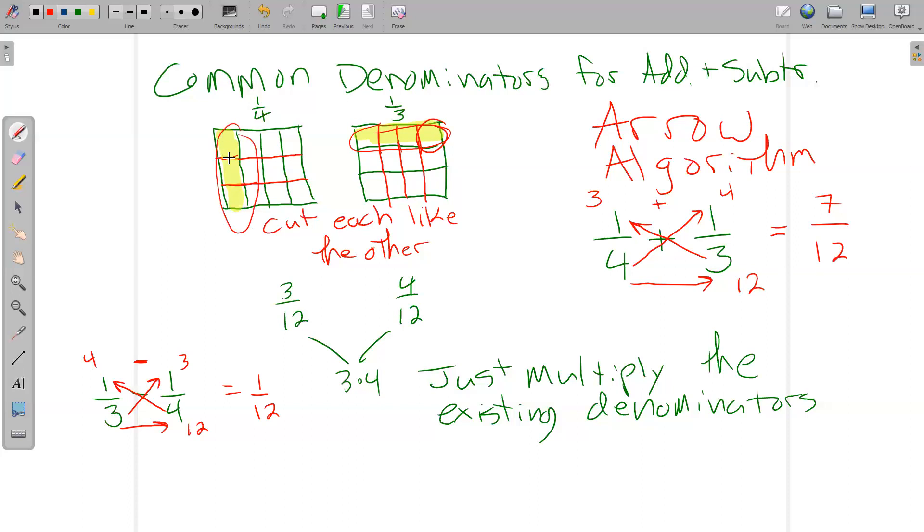So the arrow algorithm works the same way for multiplication, sorry, for addition and subtraction. We just have to remember, are we adding those numerators or are we subtracting them? And it's the slickest, easiest way to add fractions.